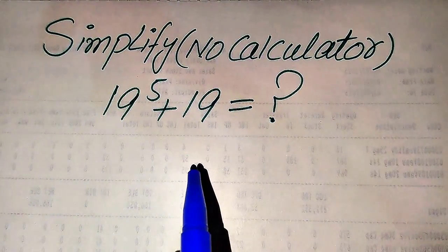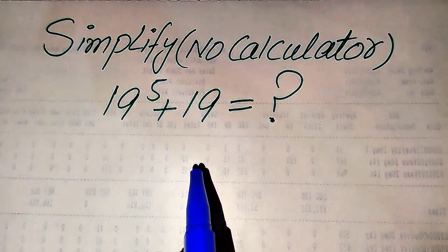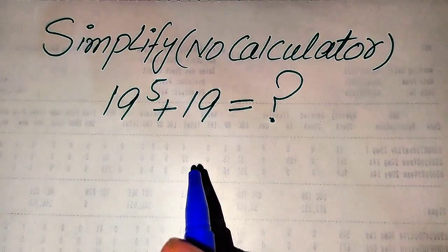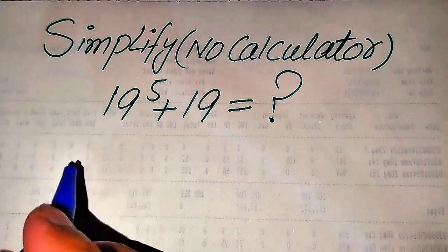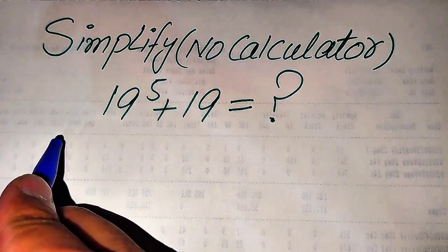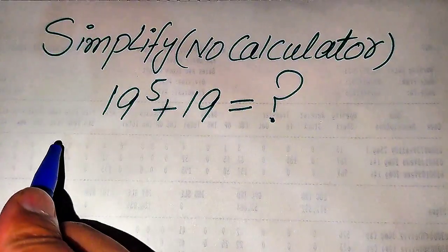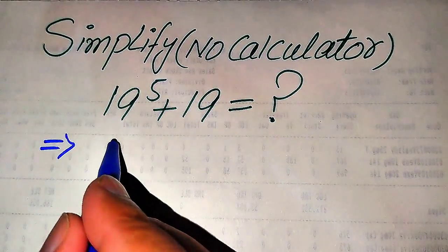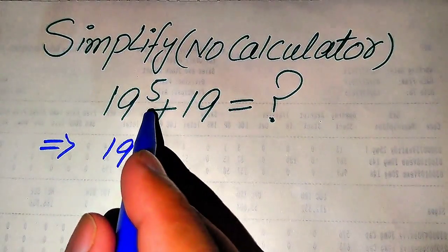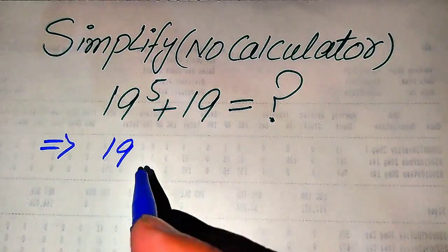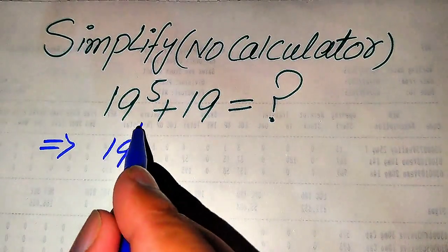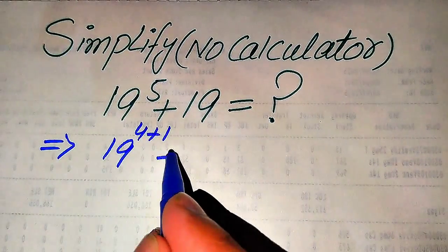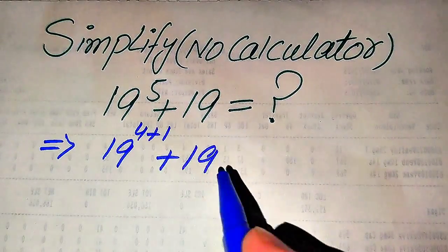I hope you like this method, but if you have another method in your mind, please do not hesitate to write it into the comment section. Now, first we need to focus on the exponent of this term. We write the exponent 5 as 4 plus 1, and plus this is our 19.